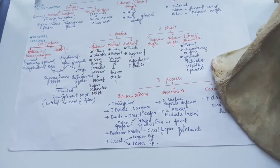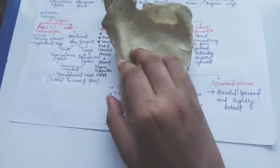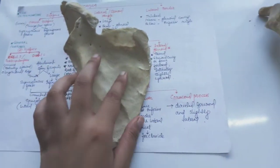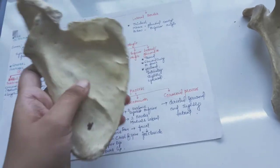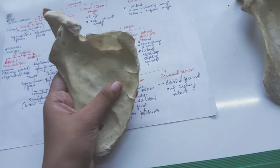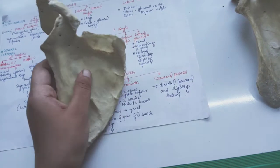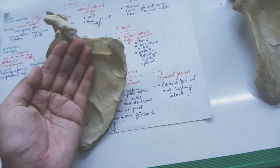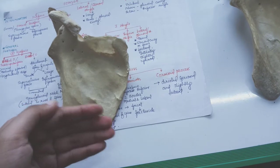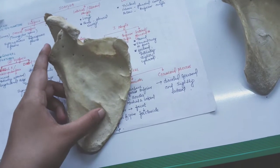The surfaces — the costal surface. This one is the costal surface, which is also known as the subscapular fossa. It is concave and it is directed medially and forward. It is marked by three longitudinal ridges.